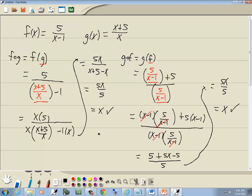Now, both of these gave us x, which is what we're looking for. That means that they're inverses. So if you find a composition going both ways, and they both give you x, then f and g are inverses.